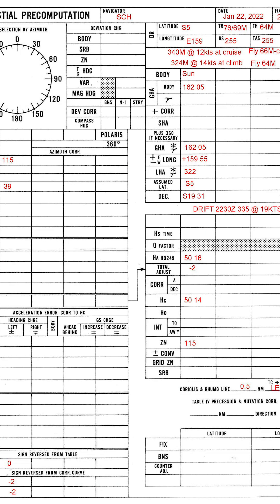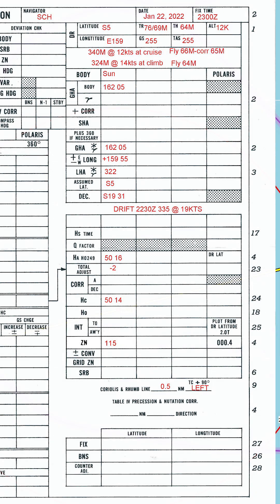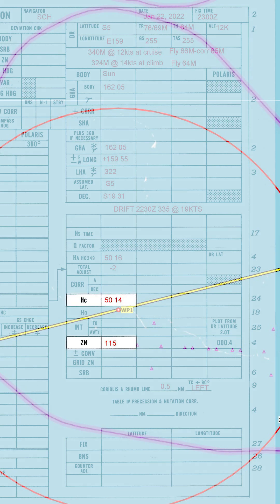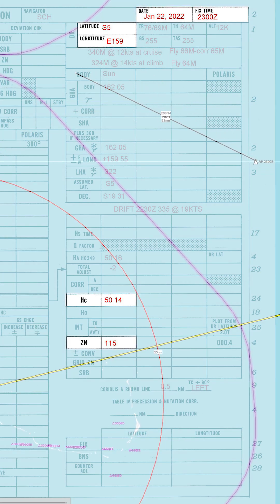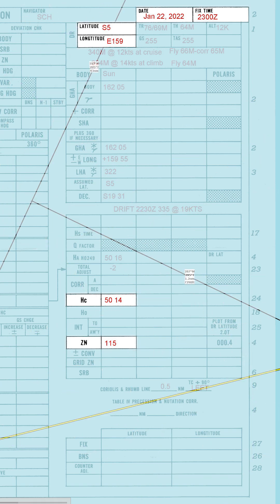Next I'll run through this pre-computation form for the first waypoint, which I filled out prior to departure. The basic idea here is we'll calculate the sun's azimuth and altitude at a given location at a given time near where we hope to be. We can then use that information to compare with our actual sextant reading to quickly determine where we are relative to the known position.